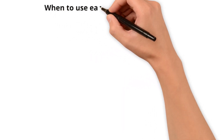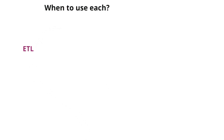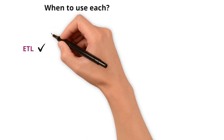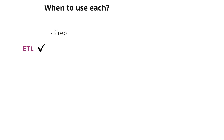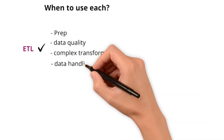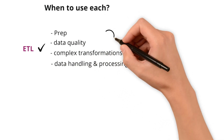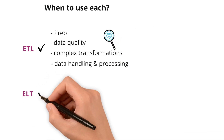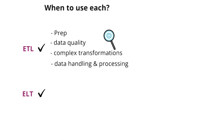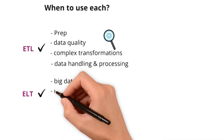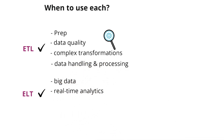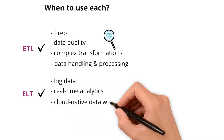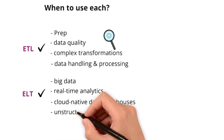When to use each? ETL is your choice for recipes that need more prepping — where data quality and complex transformations are crucial, and where data handling and processing need to be tightly controlled for compliance. ELT is for a quick, hearty stew: perfect for big data and real-time analytics, especially with cloud-native data warehouses and when the data structure can vary over time.